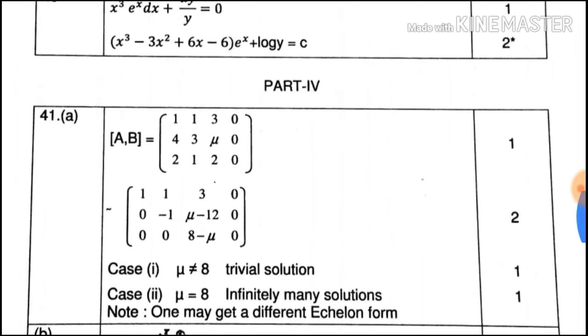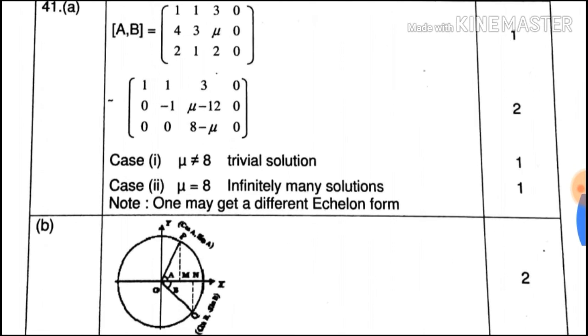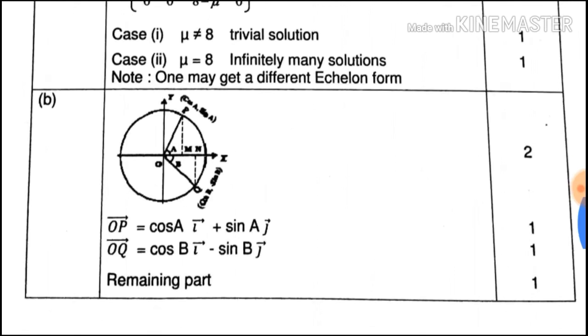Next is Part 4. That is A-B option, A-R-B.